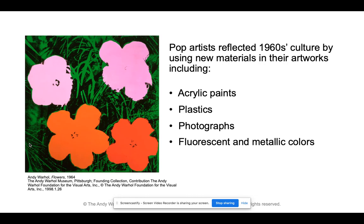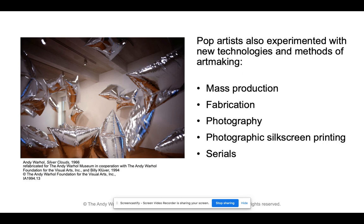Pop artists reflected 1960s culture by using new materials in their artworks, including acrylic paints — which are a little bit like tempera paint but thicker and don't wash out of clothes. They also used plastics, photographs, and fluorescent and metallic colors. Fluorescent colors are really bright neon colors, and metallic colors are like silver, gold, and bronze.